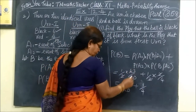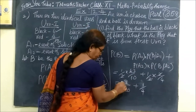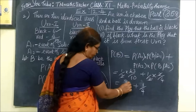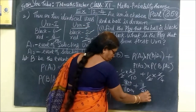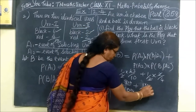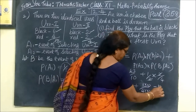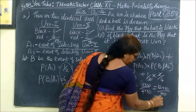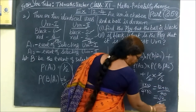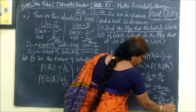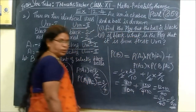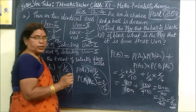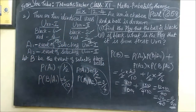That is equal to 6 by 20 plus 1 by 4, which gives 3 by 10 plus 1 by 4. Taking LCM 40: 12 plus 10 by 40, that is 22 by 40, equal to 11 by 20. So we have found the first answer — the total probability of drawing a black ball is 11 by 20.